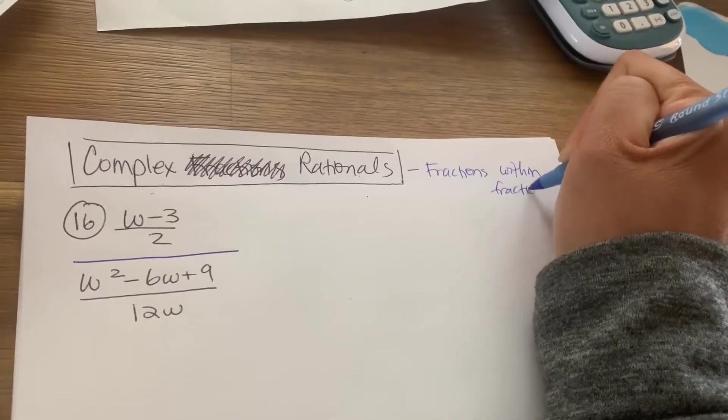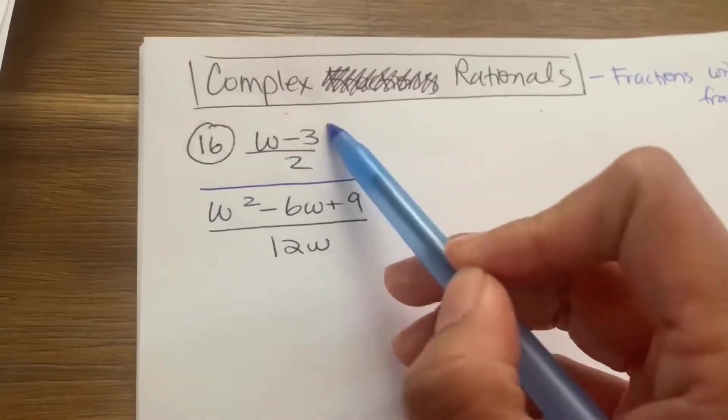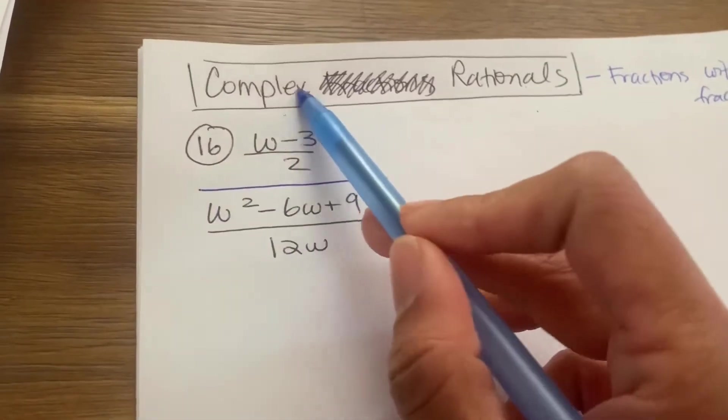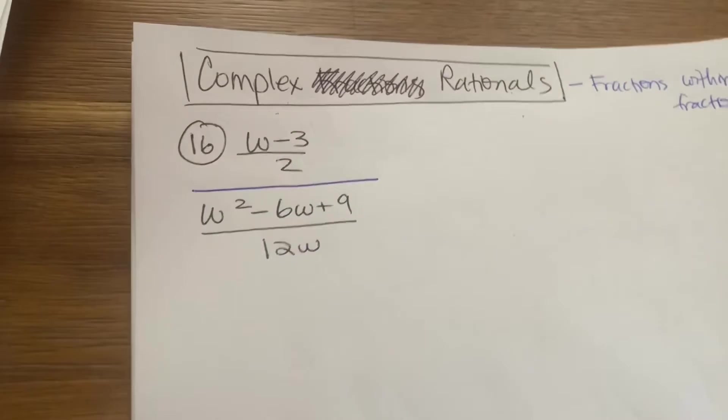So it's complicated looking fractions, right? So here, a fraction here and a fraction here, and it's divided by each other. It's a fraction divided by another fraction.